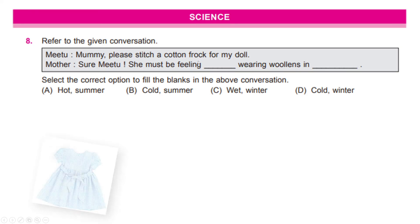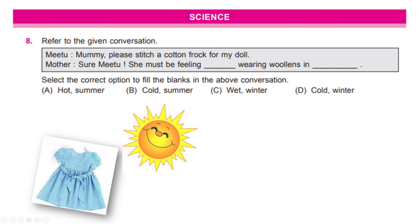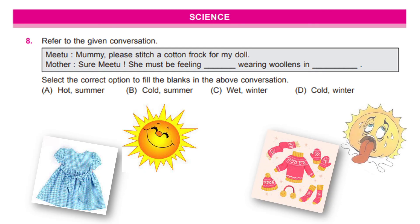Now, here if you understand correctly, Meetu is asking her mother for a cotton frog and her mother agrees. Mother says, sure Meetu. That means the season is summer. And then her mother says that she must be feeling dash, wearing bullens in dash. Now, since we know that the season is summer, if she is wearing bullens, she must be feeling hot. So, our answer is option A.